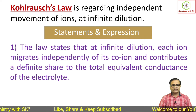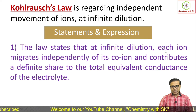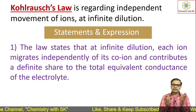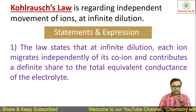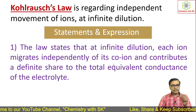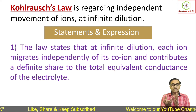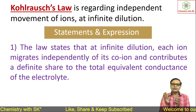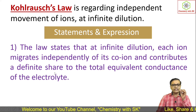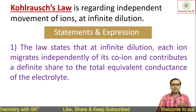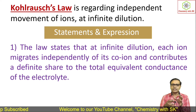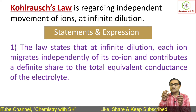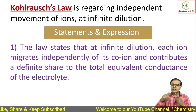At infinite dilution, each ion migrates independently. Whatever ions are present — positive or negative — all the ions are moving independently. Each ion migrates independently of its co-ion. For example, if K+ is present, then Cl- may be its co-ion. Irrespective of its co-ion, each ion is moving independently and contributing a definite share to the total equivalent conductance of the electrolyte.